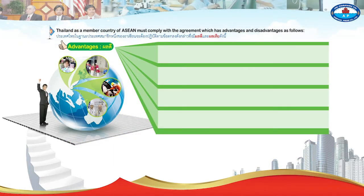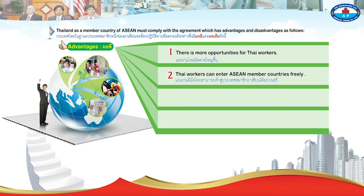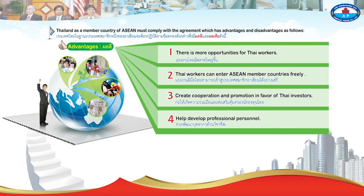Thailand, as a member country of ASEAN, must comply with agreements that carry both advantages and disadvantages. Advantages include: 1. More opportunities for Thai labor. 2. Thai labor can enter ASEAN member countries freely. 3. Cooperation and promotion in favor of Thai investors. 4. Help in developing professional personnel.